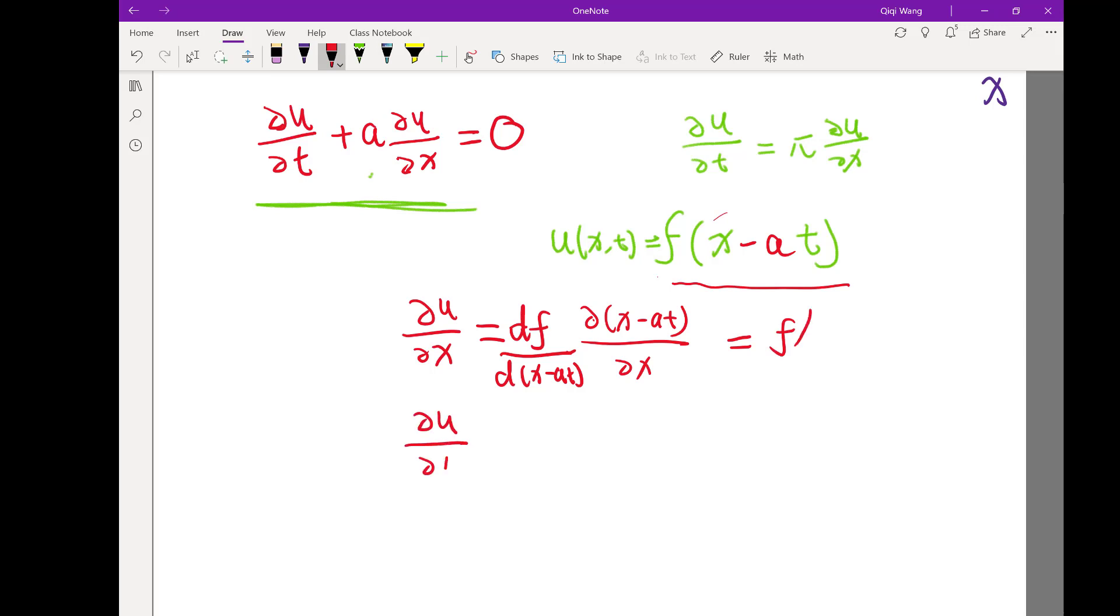How about ∂u/∂t? It's the same first term, but the second term is d/dt, right? Partial (x-at) partial t. Now partial derivative to t, which means take x to be fixed, only differentiate with respect to t. What is that? Negative a. Still we have f'.